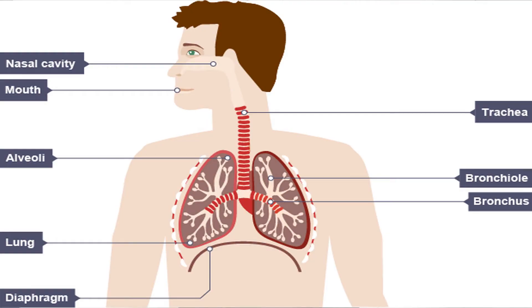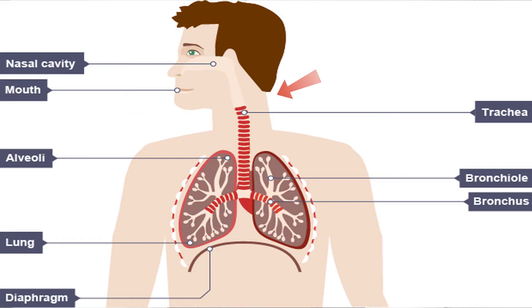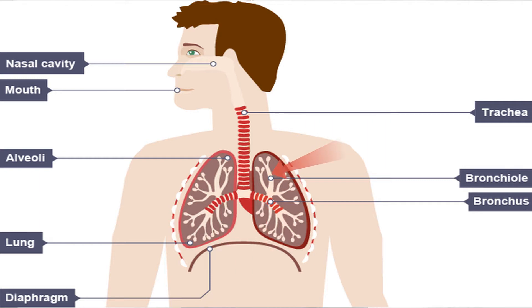When we inhale, we take in oxygen through our nose and mouth. From here, oxygen passes into the trachea, also known as the windpipe. From here, air enters the bronchi and moves into the bronchioles, and finally this oxygen-rich air reaches the alveoli, which are situated in the lungs.